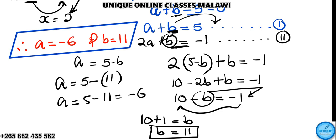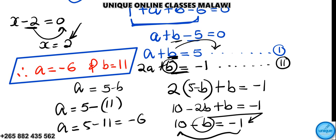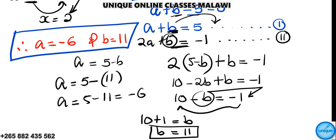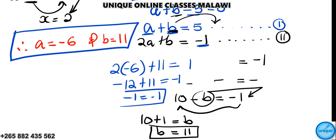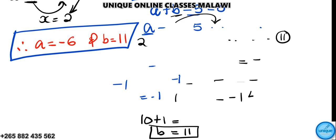This is the answer which was needed. We can prove it by substituting back. In equation 1, a equals negative 6 and b equals 11, so negative 6 plus 11 equals 5, which is correct. Similarly in equation 2, 2 times negative 6 plus 11 equals negative 12 plus 11 equals negative 1, which matches. Therefore it's proved.